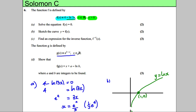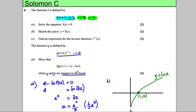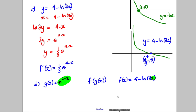We've got a new function and are asked to show that f of g of x equals a certain expression where a and b are integers to be found. So g of x is e to the 2 subtract x. For part D, g of x is equal to e to the 2 subtract x, and we're asked to find f of g of x. We're going to put g of x into our function f, where f is 4 subtract the natural logarithm of 3x, substituting g(x) in everywhere we see x.